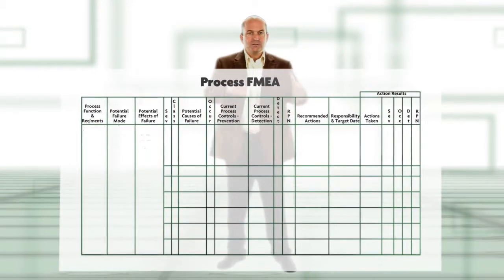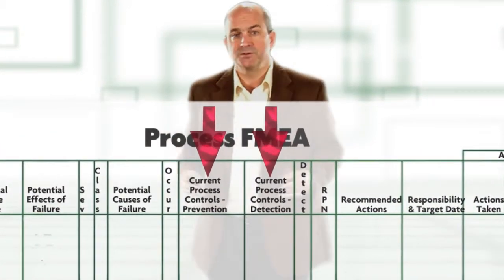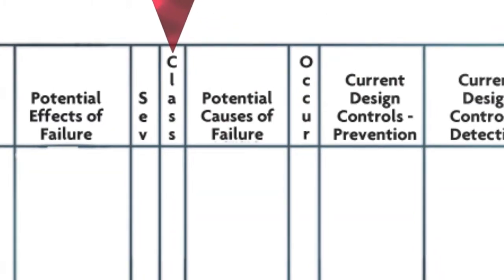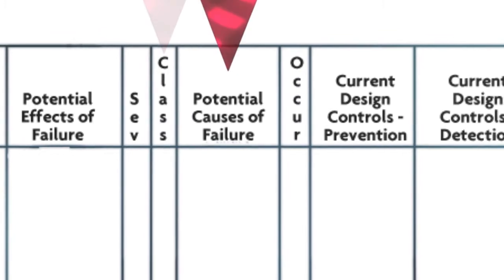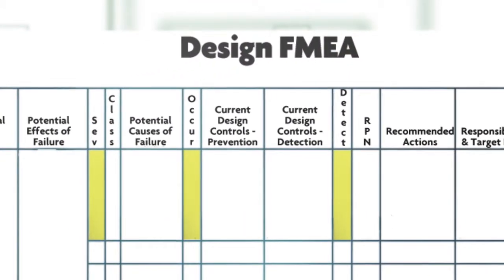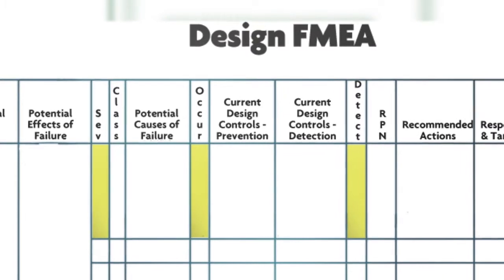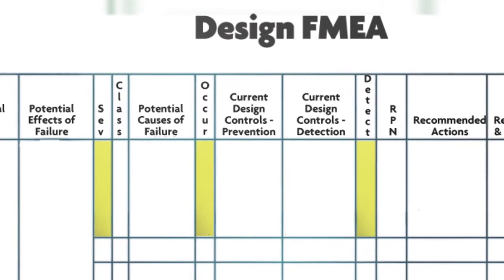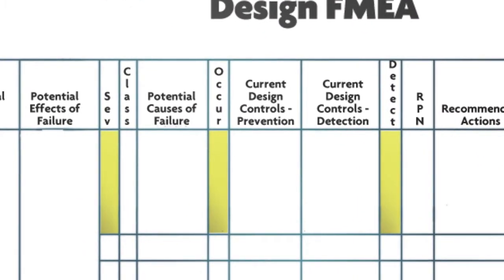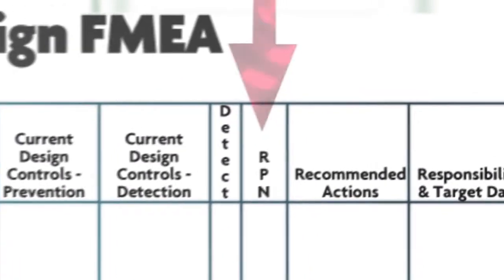The two columns we're going to focus on are the current process controls. The next column over, we talk about what are the causes of failure. We take those three ratings — the severity, the occurrence, and the detectability — and we multiply them to come up with a risk priority number.